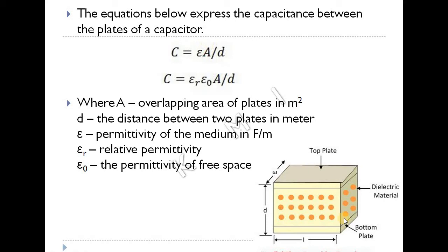This is an example of a parallel plate capacitive transducer. In the capacitive transducer, there are two plates — one plate is fixed. If there is a movable plate, you can move it to change the distance between the plates.